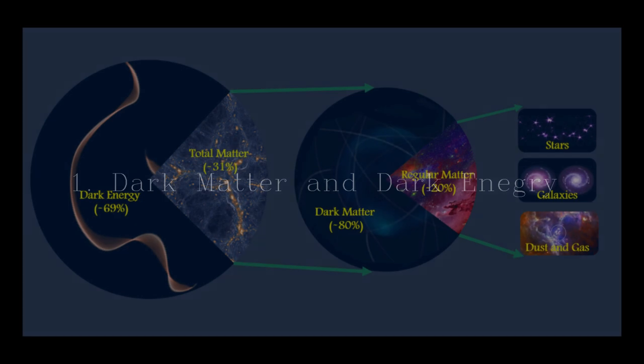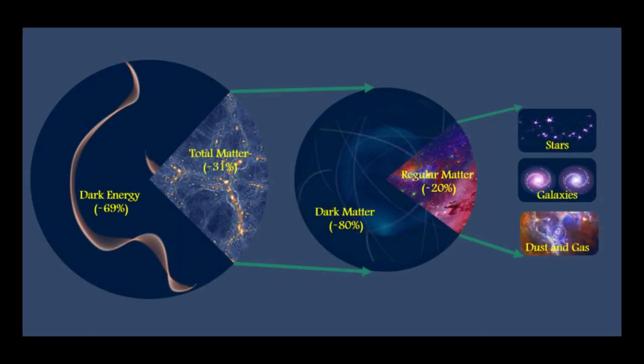Number 1: Dark matter and dark energy. Finally, the most chilling fact of all. These mysterious substances make up around 95% of the universe, yet we can't see, touch, or directly detect them. Dark matter is believed to hold galaxies together, while dark energy accelerates the expansion of the universe.